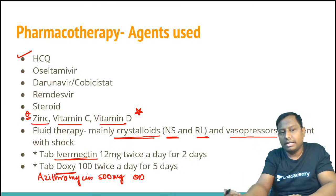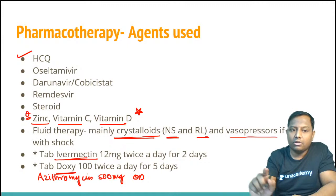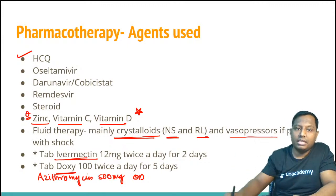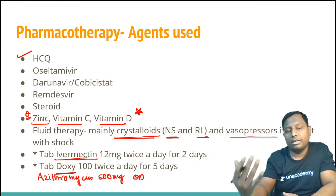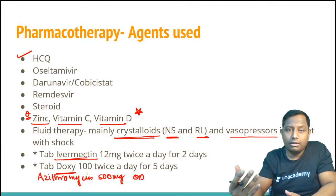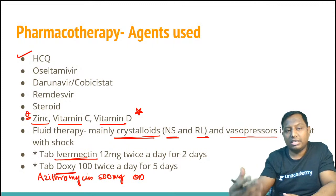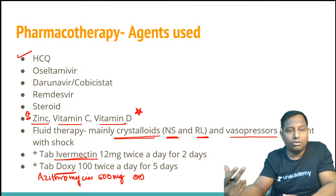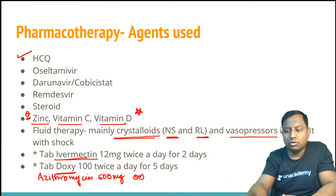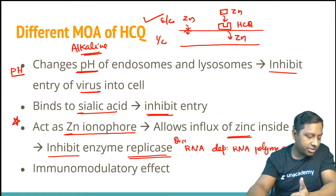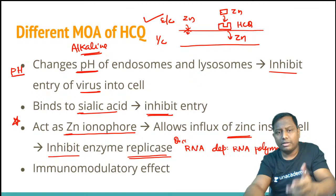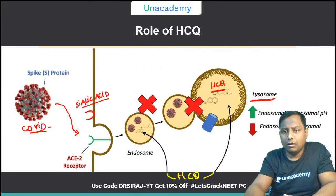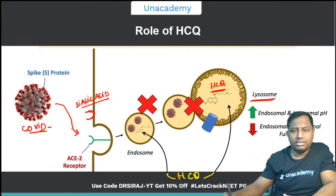HCQ also has an immunomodulatory effect, which is mainly utilized in rheumatoid arthritis. In summary, HCQ's mechanism of action: first, pH change of endosome and lysosome; second, sialic acid binding; third, zinc ionophore activity. On the basis of this zinc ionophore action, zinc is also used as an add-on supplemental drug. Zinc alone does not work — it must be given along with hydroxychloroquine. Even for prophylactic purposes, zinc along with HCQ is being used.